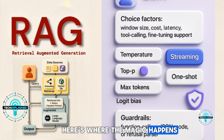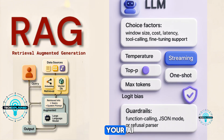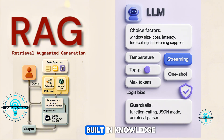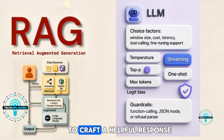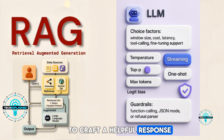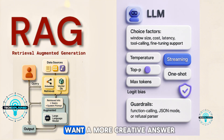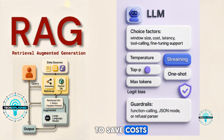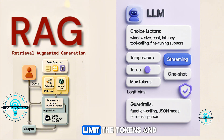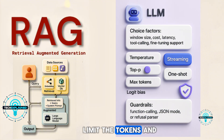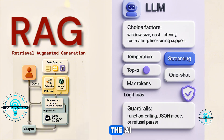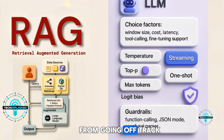Here's where the magic happens. Your AI blends these retrieved bits of info with its built-in knowledge to craft a helpful response. Want a more creative answer? Adjust the temperature. Need to save costs? Limit the tokens. And don't worry, there are built-in safety measures that prevent the AI from going off-track.